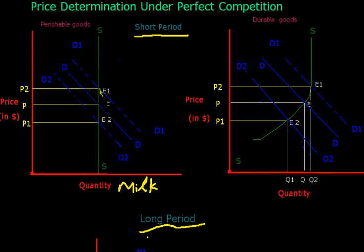If demand increases, price will increase to P2. If demand decreases, price will decrease to P1. Price is determined where demand cuts the supply curve.